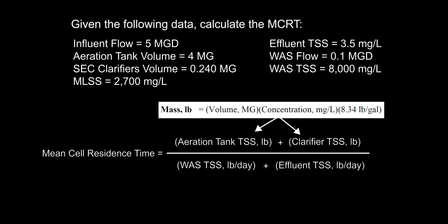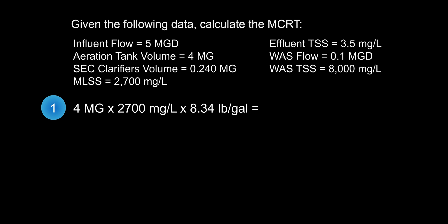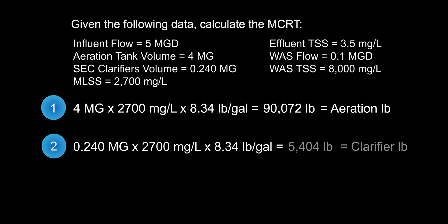In the first step, we'll use the mass formula to solve for pounds of sludge in the aeration system. We do this by taking the aeration volume of 4 million gallons, multiplying it by the MLSS of 2,700 milligrams per liter, and multiplying that by the conversion factor 8.34 pounds per gallon. This gives us 90,072 pounds in aeration. For the second step, we do the same using the secondary clarifier volume: 0.240 million gallons times 2,700 mg/L times 8.34 lb/gal, giving us approximately 5,404 pounds in the clarifiers.